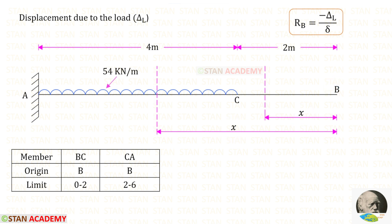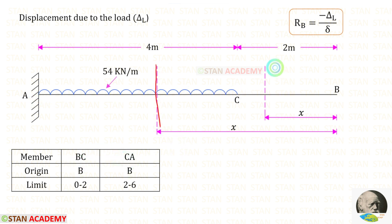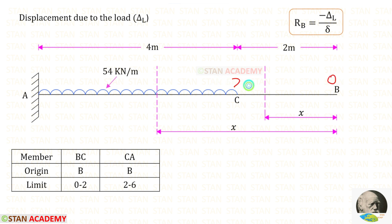Now let us make a table. First, let us enter the members — BC and CA. For both sections, the origin is B. Now let us enter the limits: for BC the limit is 0 to 2, and for CA it is 2 to 6.